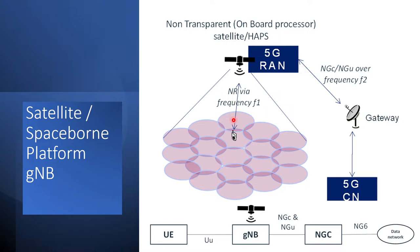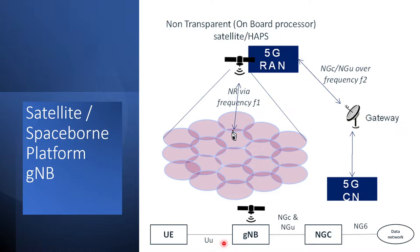So this is our access link and this is our feeder link. The link between satellite and gateway is a feeder link. You have user equipment that can be a mobile or IoT device, or that can be a node or can be a relay UE — it can be any type of UE. And then you have the air interface, UU interface, and gNodeB is implemented onto the satellite.